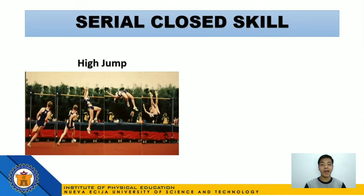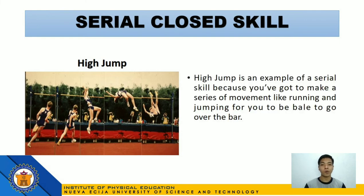We have high jump as an example of a serial closed skill. High jump is a serial closed skill because you've got to make a series of movements like running and jumping to go over the bar. It became a serial closed skill because your purpose is just to go over the bar by executing a series of movements, and the audience and opponents are not a factor — they can't impede you, and you have control of everything.